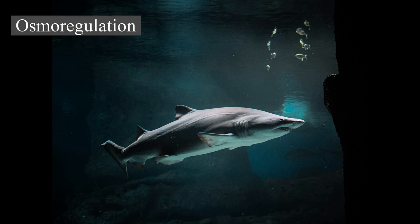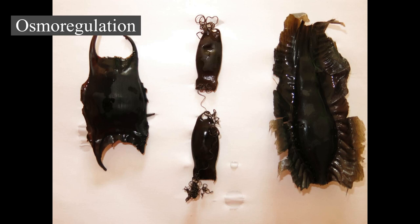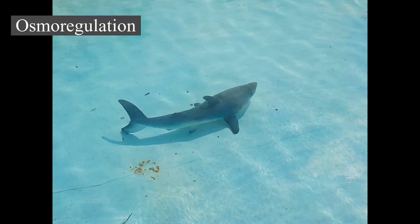Most sharks are cold-blooded, or more precisely poikilothermic, meaning that their internal body temperature matches that of their ambient environment. Members of the family Lamnidae, such as the shortfin mako shark and the great white shark, are homeothermic and maintain a higher body temperature than the surrounding water. In these sharks, a strip of aerobic red muscle located near the center of the body generates heat, which the body retains via a counter-current exchange mechanism by a system of blood vessels called the rete mirabile. The common thresher and bigeye thresher sharks have a similar mechanism for maintaining an elevated body temperature.